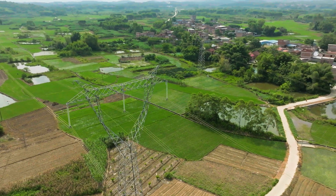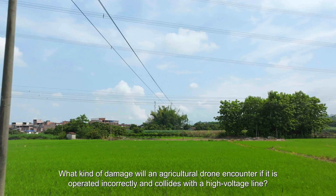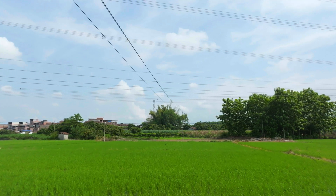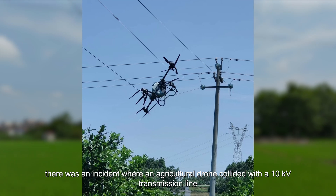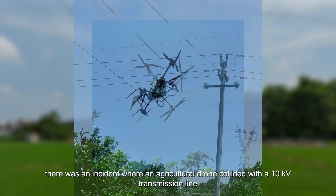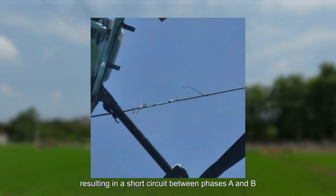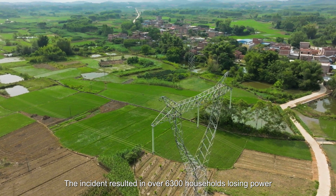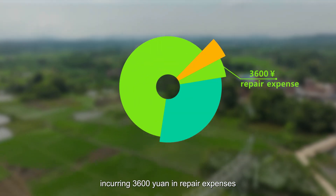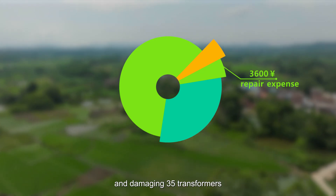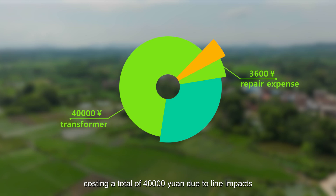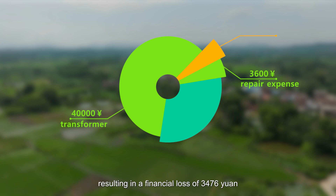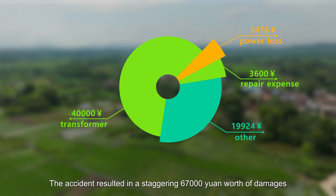In May 2022, an agricultural drone collided with a 10 kV transmission line and became entangled above the power lines, resulting in a short circuit between phases A and B. The incident caused over 6,300 households to lose power, incurred 3,600 yuan in repair expenses, and damaged 35 transformers at a total cost of 40,000 yuan. Due to line impacts, 5,456 kilowatt-hours of electricity were lost, resulting in an additional financial loss of 3,476 yuan — bringing total damages to a staggering 67,000 yuan.